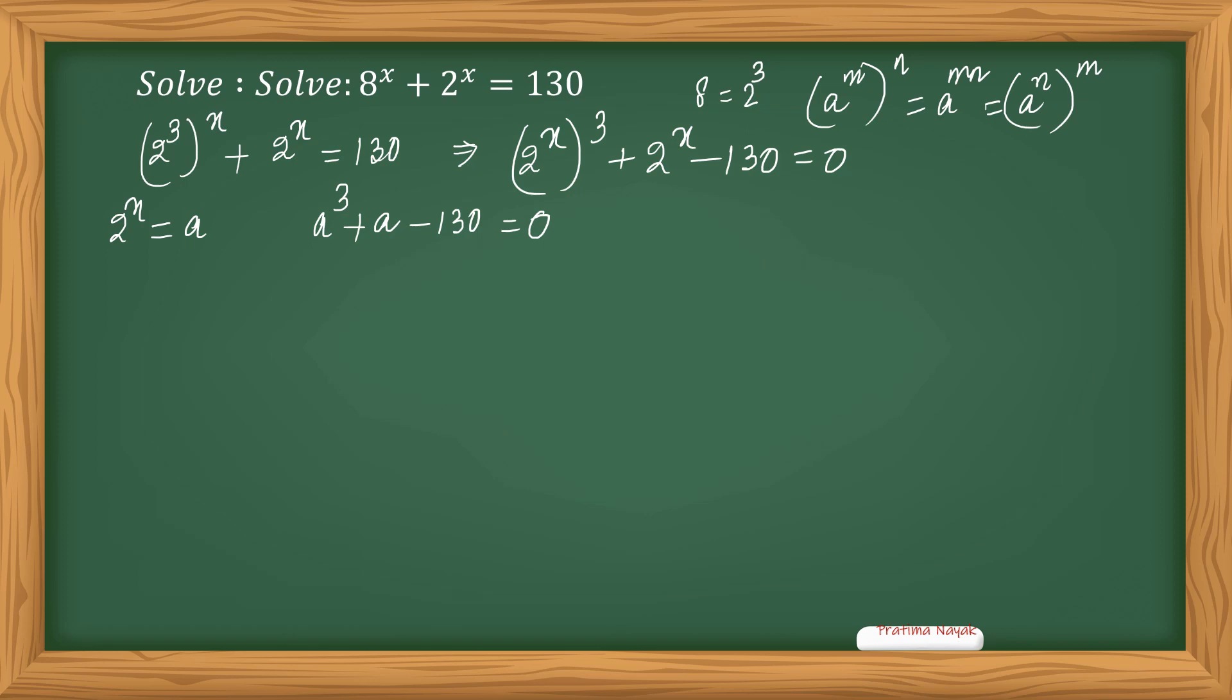This is a cubic equation, but I am trying to solve by splitting the middle term. I will break this a as 130 has factors 26 and 25. So a can be written as 26a minus 25a.